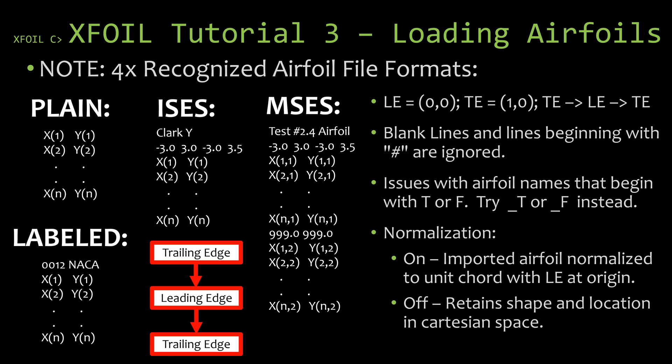One of the reasons I chose the Clark Y airfoil — besides it being popular — is that it's actually in the wrong format, which we'll address shortly. When importing an airfoil, you also want to check whether the normalization flag is on or off, as that changes how it's imported. If it's on, X-Foil will import the airfoil and normalize it to a unit chord with the leading edge at the origin. If it's off, it retains its original size and location in Cartesian space — so if the airfoil is saved at five degrees angle of attack, that will be reflected.